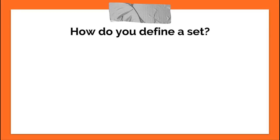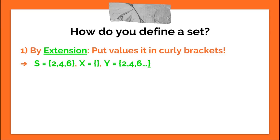How do you define a set? There's two ways to define a set. The first way is by extension. And we do that like so by putting values into curly brackets. We have S equals two, four, six. And then we have X equals an empty set. There's no values in there. And Y equals basically all even numbers starting at two. What that dot dot dot means is that the pattern's going to continue. So Y is going to equal two, four, six, eight, ten, twelve, and so on.